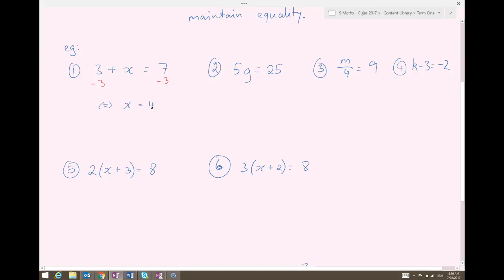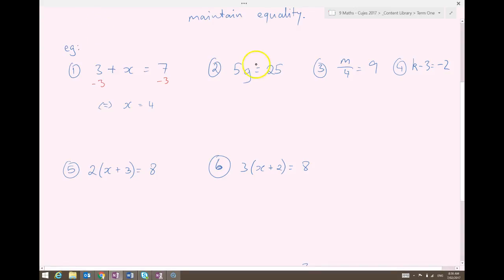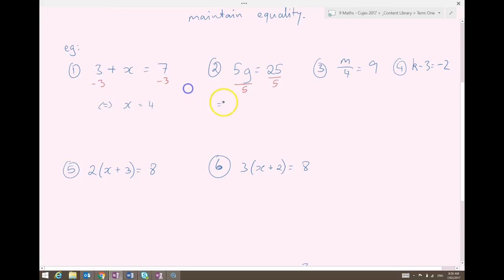The next one, the variable g is being multiplied by 5. The inverse of multiplying by 5 is dividing by 5, or multiplying by 1 fifth. You know that they're equivalent, so that's okay. So what's the equivalent expression that I have now? Well, 5 divided by 5, they cancel that. No, they go to the 1s. So I have g equals 25 divided by 5 is just 5.